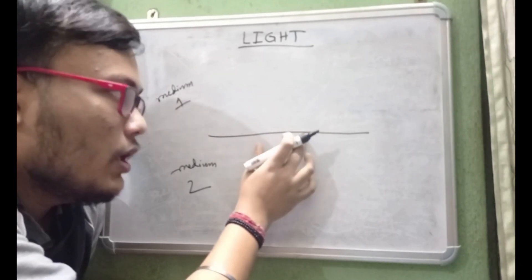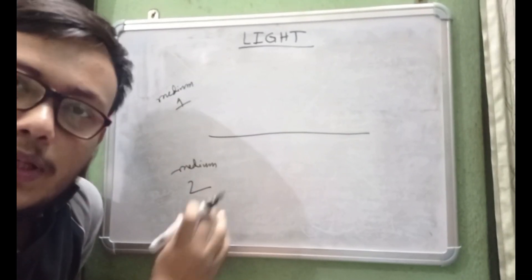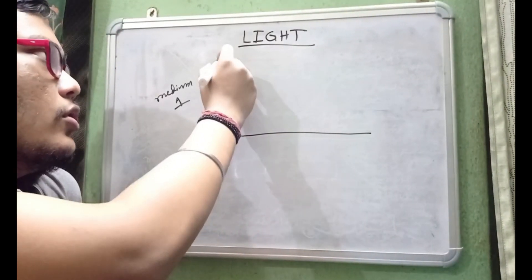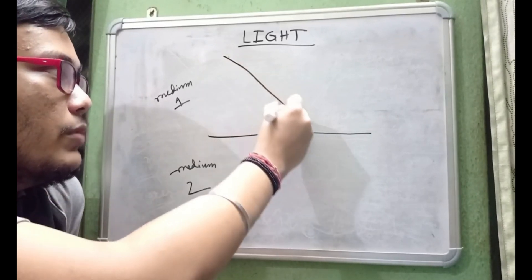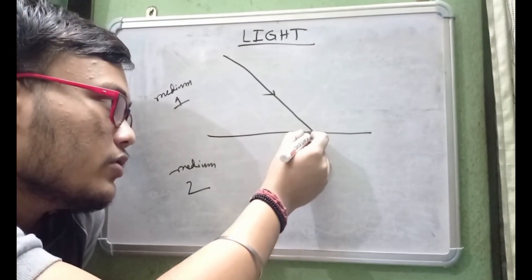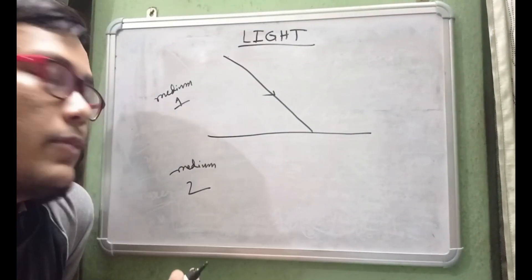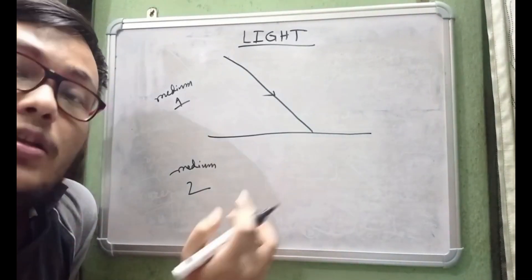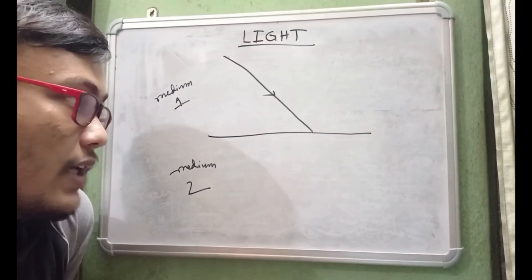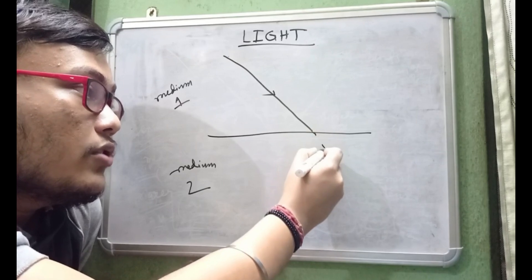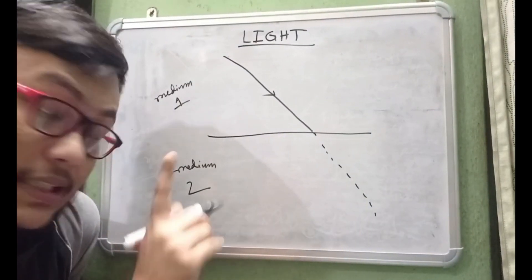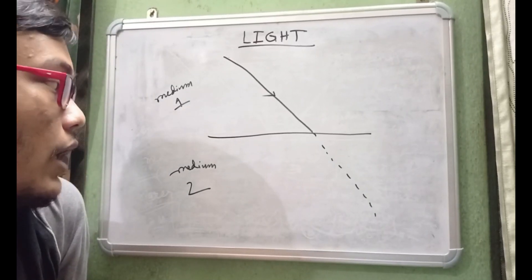Instead of an opaque surface we are taking another transparent optical medium through which light passes. Initially the light will pass undeviated through medium one, but as soon as it falls on the surface separating the two mediums, it will pass through rather than being reflected. The big question is whether it will continue undeviated through medium two as well.